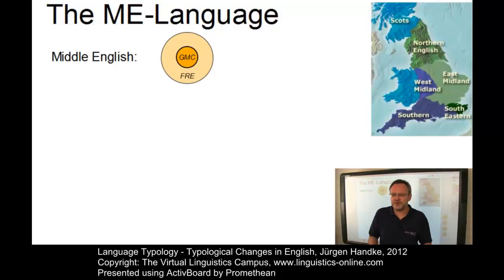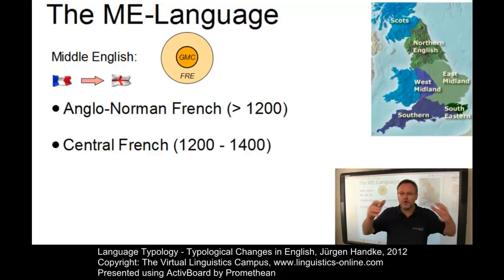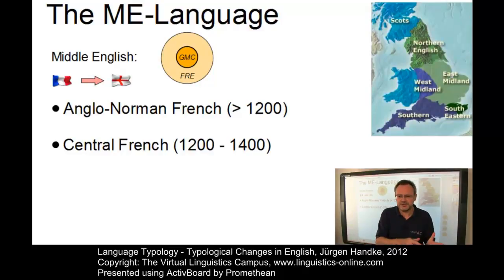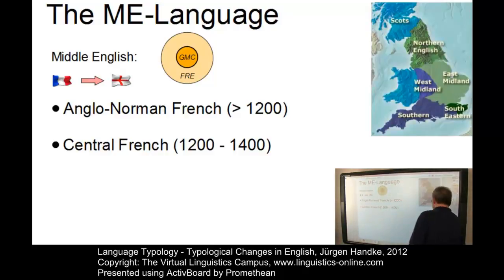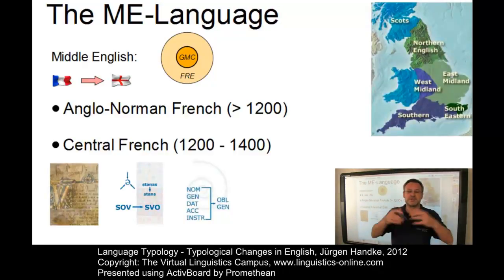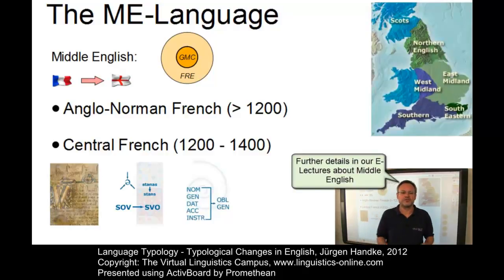Two periods of French influence on Middle English can be distinguished: the Anglo-Norman French period up to the late 12th century, and the Central French period from the 13th until the end of the 15th century. The adoption of words from two different kinds of French accounts for differences in the pronunciation of French loanwords. In Middle English, the structural complexity of Old English had disappeared. The most significant development was phonological: the leveling of unstressed vowels led to a reduction of inflectional distinctions, thereby causing changes in the morphology and syntax of English.